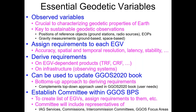A committee within the Bureau of Products and Standards was created in order to create a list of these essential variables and assign requirements to them and the derived products. This committee consists of representatives of the IAG services, commissions, inter-commission committees, and focus areas.